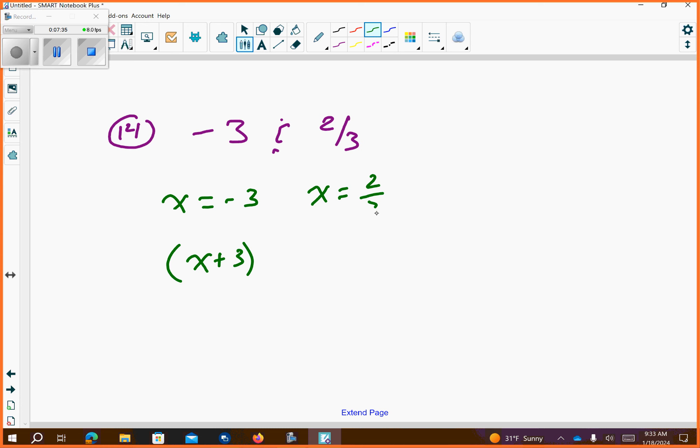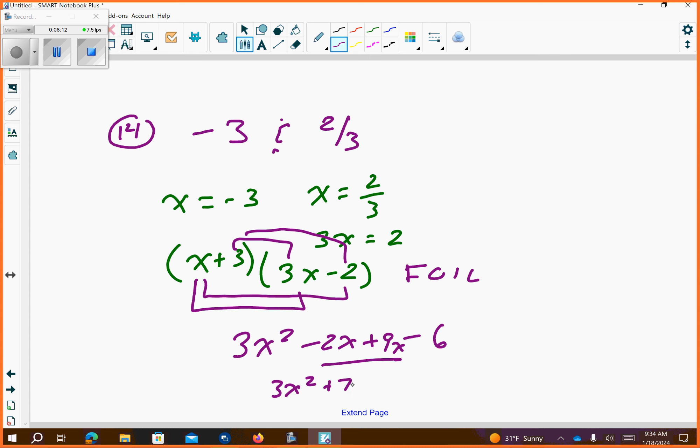Then the other one, I have x equals 2 over 3. Multiply both sides by 3, so you get 3x equals 2. So this binomial is 3x minus 2. And then what you want to do is you want to FOIL this. Okay? x times 3x is 3x squared. x times negative 2 is negative 2x. Inside, 3 times 3x is 9x. And then 3 times negative 2 is negative 6. Oops. Something didn't go. That should be a 9x. And then combine these like terms. And it's done.